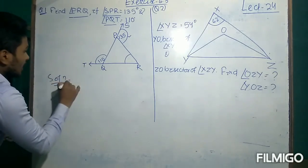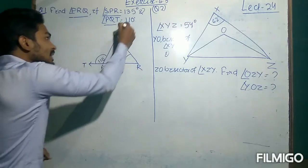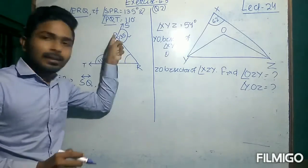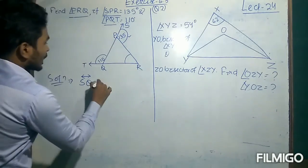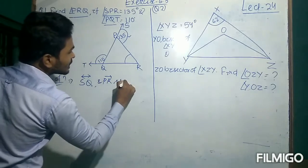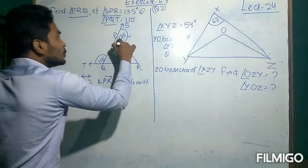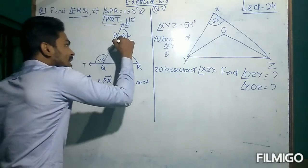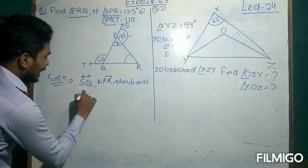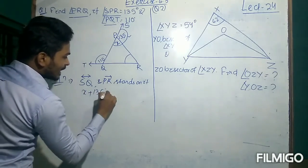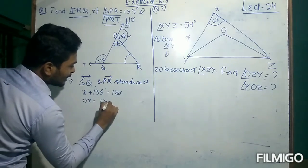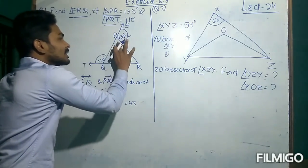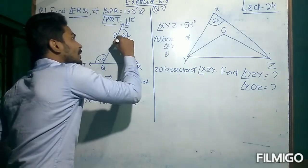Solution: SQ is a straight line, and on this straight line, ray PR stands. So the sum of the two angles formed is 180 degrees. Suppose this angle is X. Then X plus 135 degrees equals 180 degrees, so X will be 180 minus 135, that is 45 degrees. So here we find the value of X, that is 45 degrees.